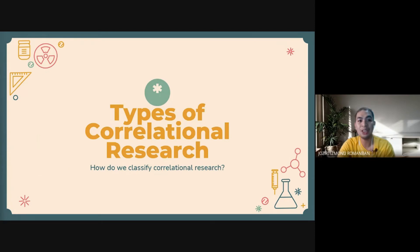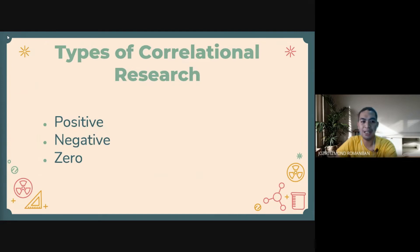There are three types of correlational research that we must always remember. First, we have positive correlational research. Next, we have negative correlational research. And lastly, we have zero correlational research or no correlation. What are the differences among these three?